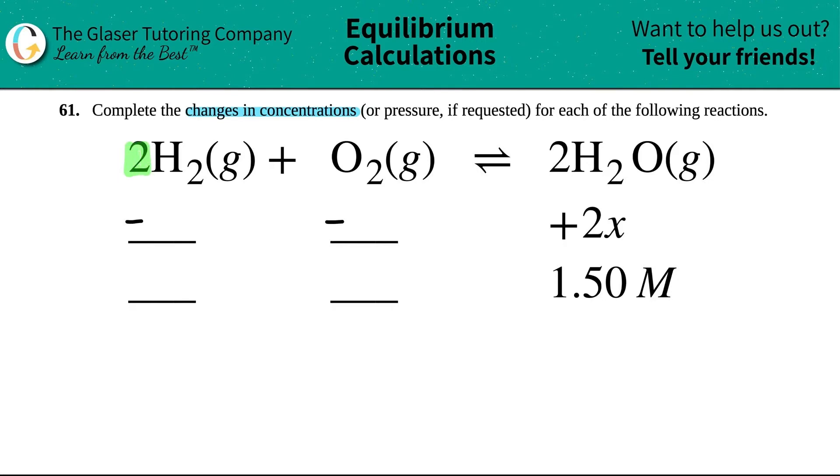There was a 2 in front of the H2. There was nothing in front of the O2. Remember, that just means that there's one of them. And then there's a 2 in front of the H2O. Now look here. There was two H2Os. I'm going up by a factor of 2X.